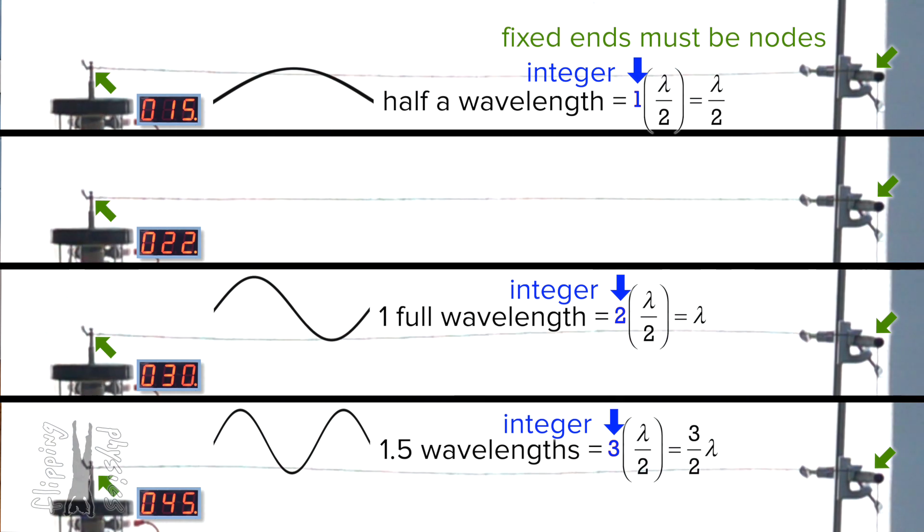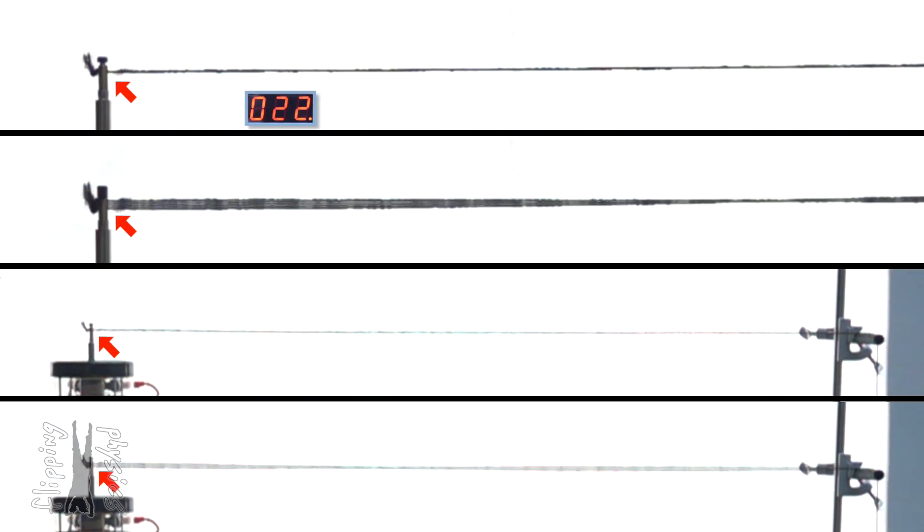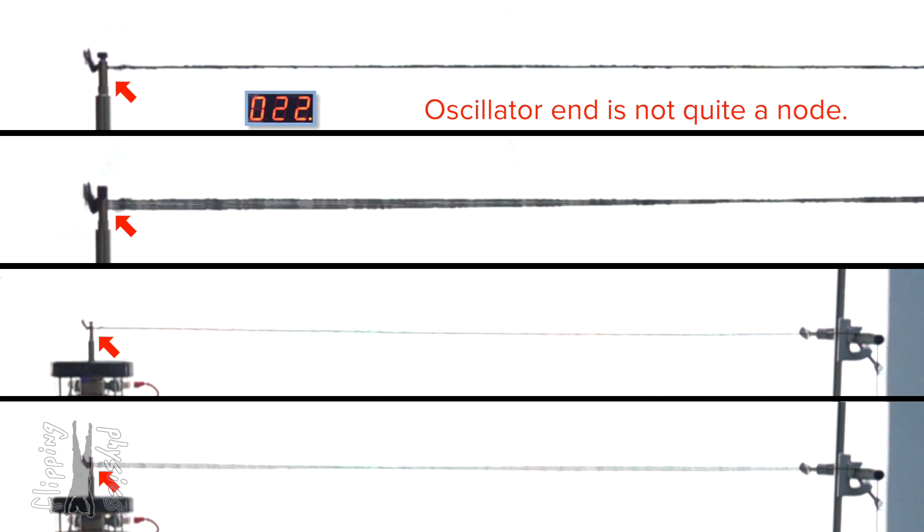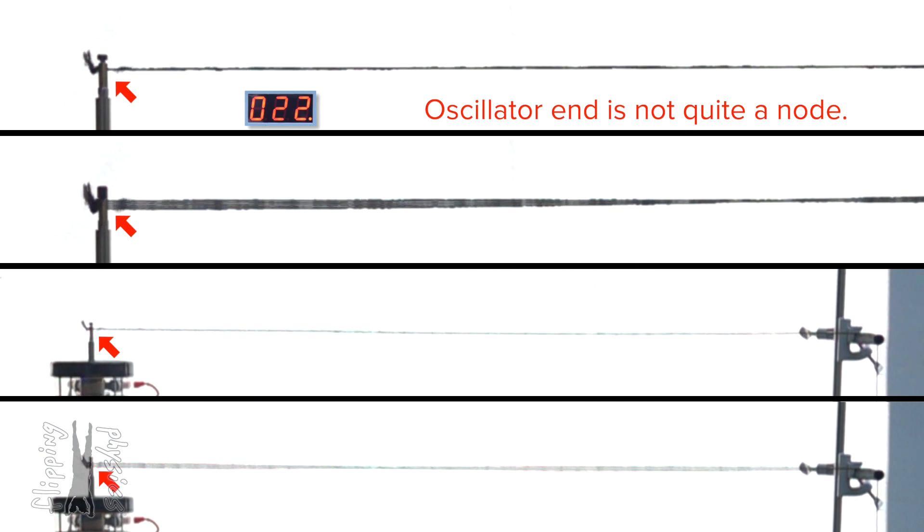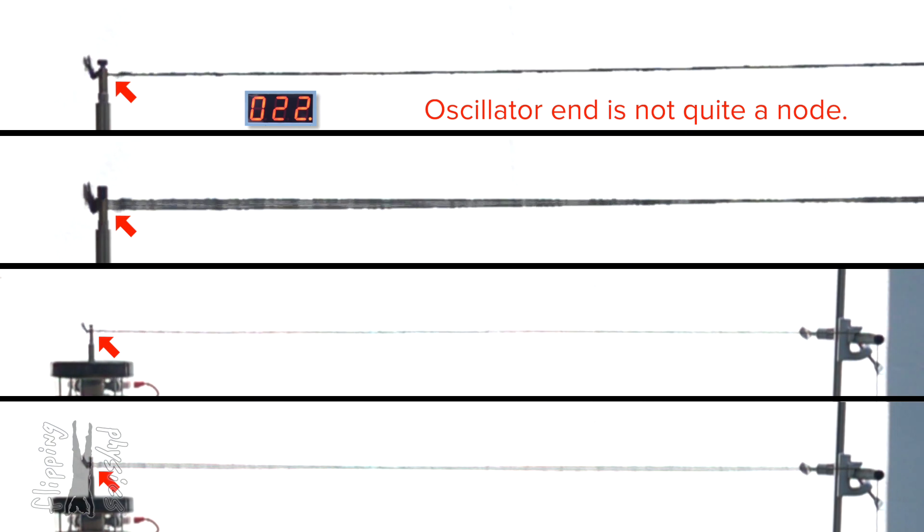Well, that's it then. Why? Yeah, why? Look closely at the left end of the string where the oscillator is going up and down 22 times every second. Oh, and that end is not really a node. Yeah, it's close to a node because it only oscillates up and down a little bit. However, it's still not a node. Right. The left end is not actually a node, so in this example we can get wavelengths which are not integer multiples of half wavelengths.